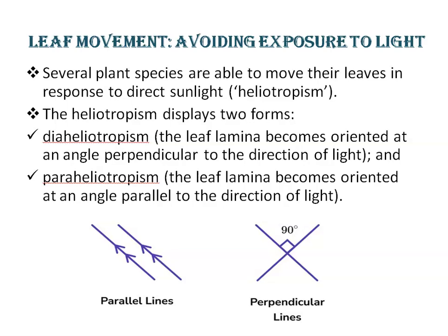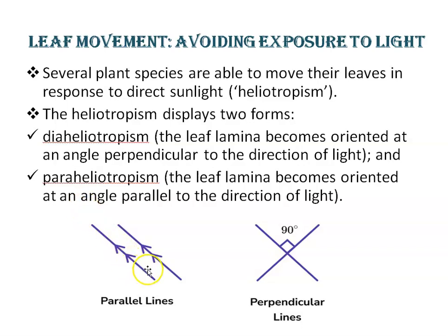Heliotropism displays two forms. The first is diaheliotropism, where the leaf lamina becomes oriented at an angle perpendicular to the direction of light. The second is paraheliotropism, where the leaf lamina becomes oriented at an angle parallel to the direction of light.